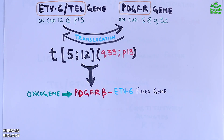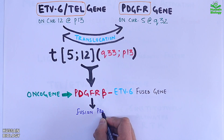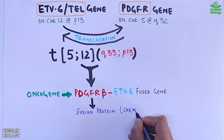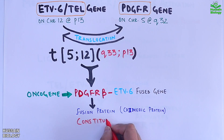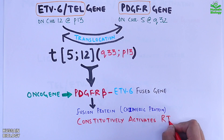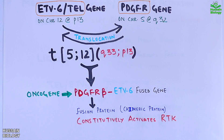From this fusion gene we get a fusion protein in the form of a chimeric protein. This protein is present within the PDGFR receptor itself, which then constitutively activates the PDGFR receptor — a type of receptor tyrosine kinase.